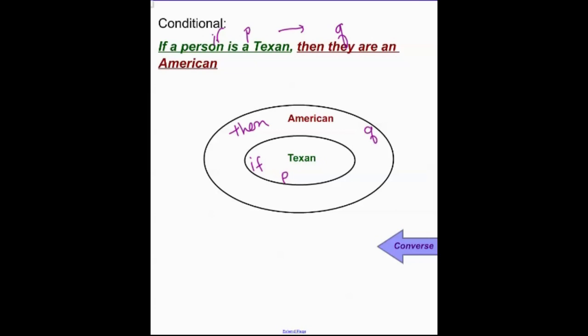Now there's a lot of people out there, so everybody from Texas is an American, but not all Americans are Texans. We've got people from Maine, and Alabama, and Kansas, all kinds of places. There's lots of people from Hawaii and Alaska. There's a lot of people that are not from Texas. The converse, therefore, is false. If they're an American, then they're a Texan.